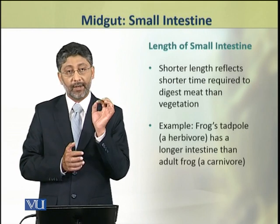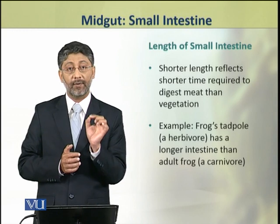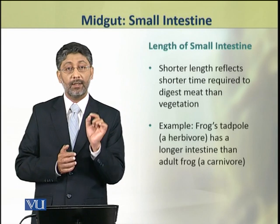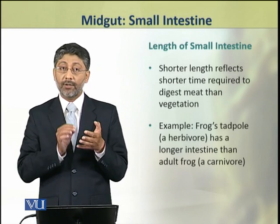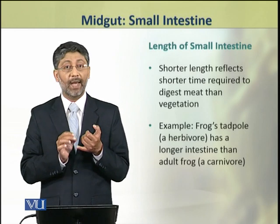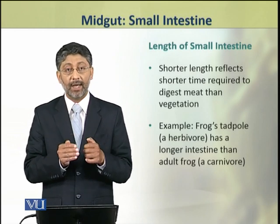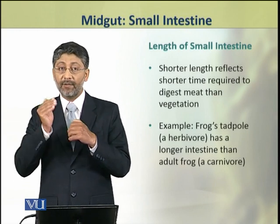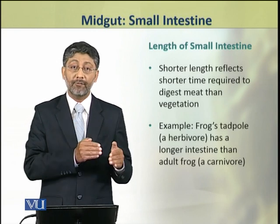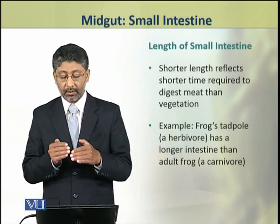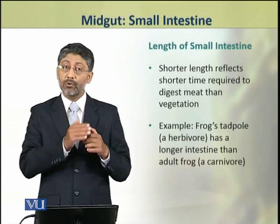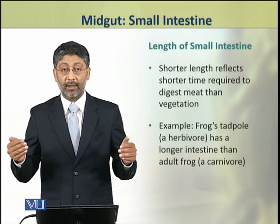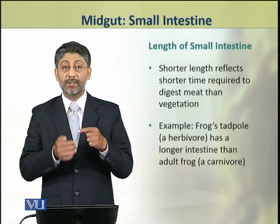A classic example of this difference in the length of the small intestine of carnivores and herbivores is seen in the frog. The tadpole larva is herbivorous, and the length of its small intestine is greater compared to the adult frog, which is carnivorous.